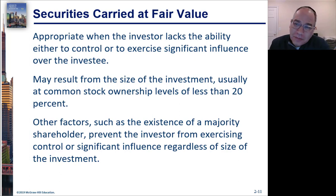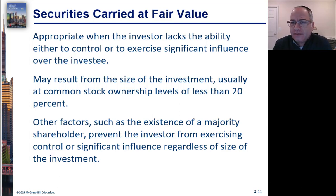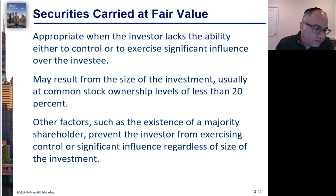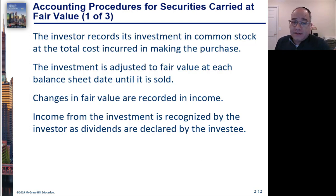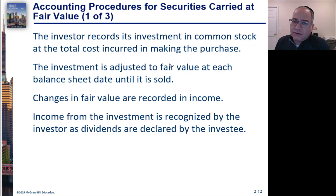The 20 to 50 percent range is approximate, and other factors can allow you to use the fair value method. When you use the fair value method, you record your investment at total cost, then at each balance sheet date you adjust the investment to fair value. The adjustment to fair value goes to income, unless it's a long-term investment, in which case the gain or loss goes to other comprehensive income.